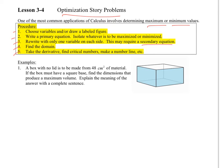Example number one. We have a box with no lid made from 48 square centimeters of material. That is the surface area. If the box must have a square base, find the dimensions that produce a maximum volume. Explain the meaning of the answer in a complete sentence. First of all, let's look at what we call our primary equation. Primary equation is the thing that we want to maximize.